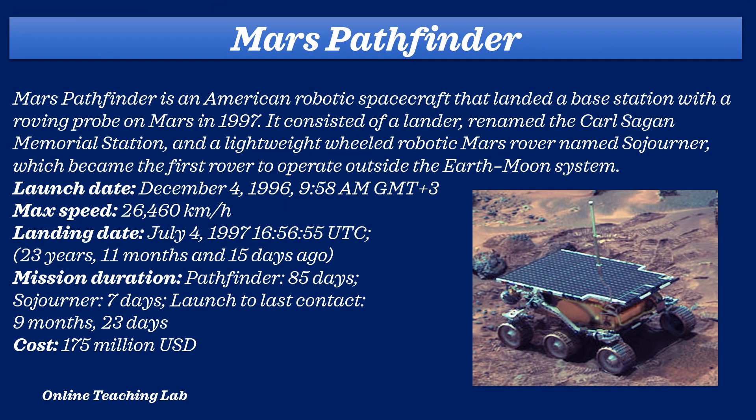Mars Pathfinder is an American robotic spacecraft that landed a base station with a roving probe on Mars in 1997. It consisted of a lander, renamed as the Carl Sagan Memorial Station, and a lightweight wheeled robotic Mars rover named Sojourner, which became the first rover to operate outside the Earth-Moon system. Its launch date was 4th December 1996, maximum speed was 26,460 km per hour, landing date was 4th July 1997, mission duration was Pathfinder 85 days and Sojourner 7 days, with launch to last contact being 9 months and 23 days. Its cost was 175 million US dollars.